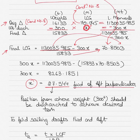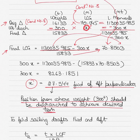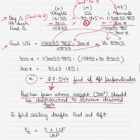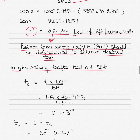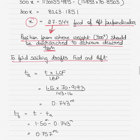Solving: 300x equals 113035.985 minus 15833 × 70.8503, which gives 300x equals 8263.1851, so x equals 27.544 meters forward of the aft perpendicular. This is the position from where the weight of 300 tons should be discharged to achieve the desired trim of 1.5 meters by stern. Finally, you also have to find the sailing drafts forward and aft.